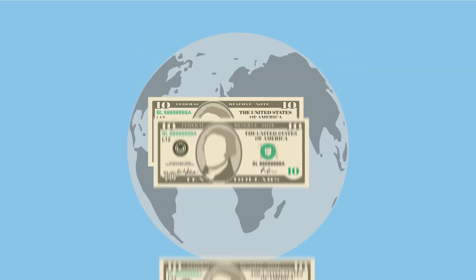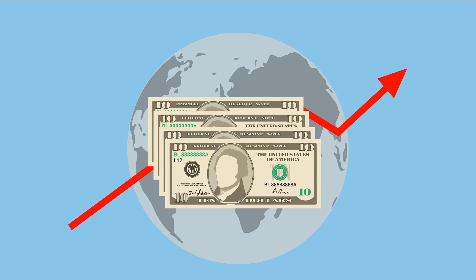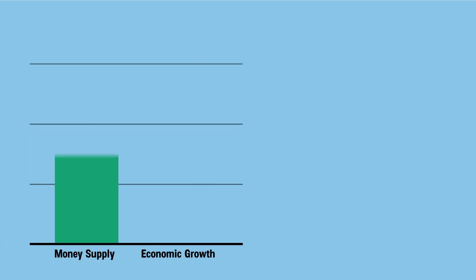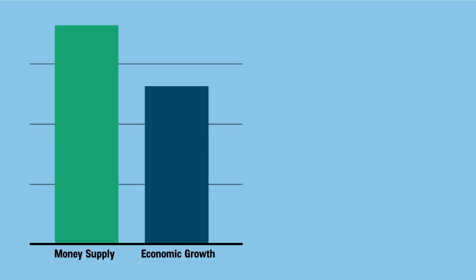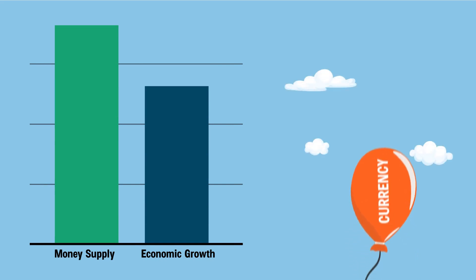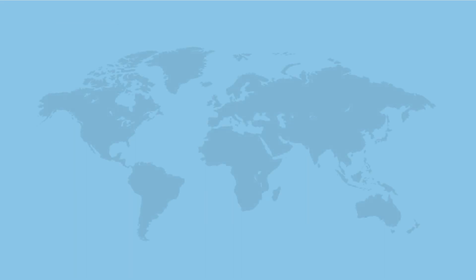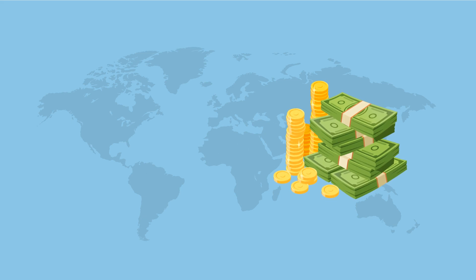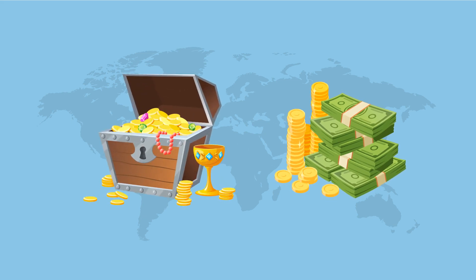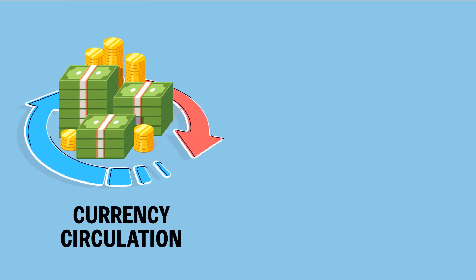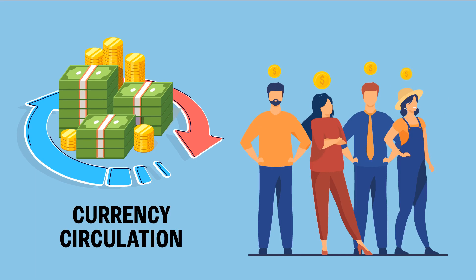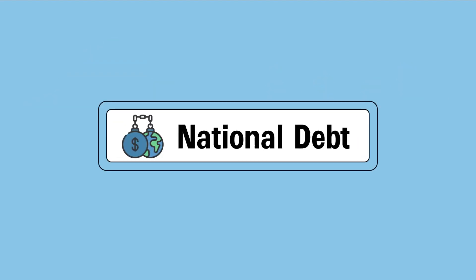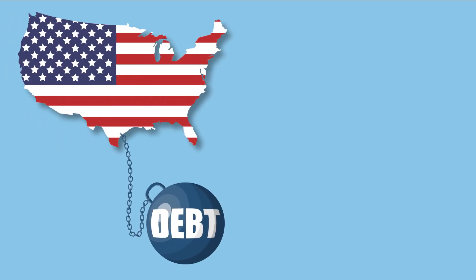Inflation is caused by multiple factors. One major cause is excess money supply: when the money supply in circulation grows above economic growth, it reduces the value of the currency. In the modern era, countries have shifted from valuing money by gold holdings. Modern money valuation is determined by the amount of currency in circulation, followed by the public's perception of the value of that currency.